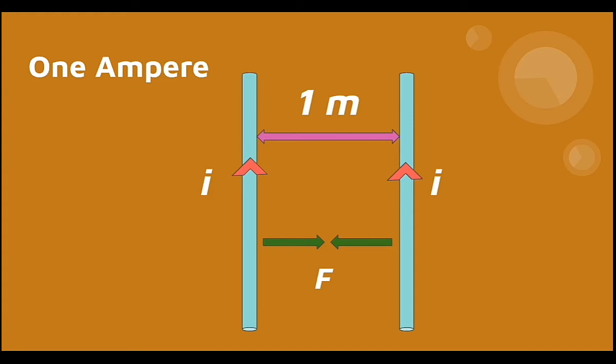...becomes exactly equal to 2 × 10^-7 Newton, then the current flowing in the conductor has the value of exactly one ampere.